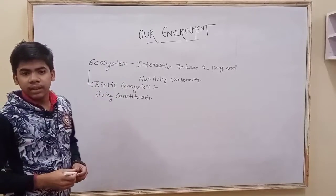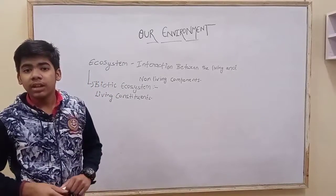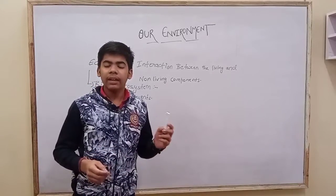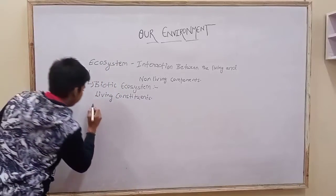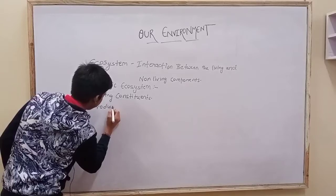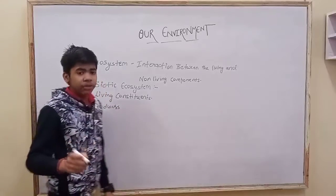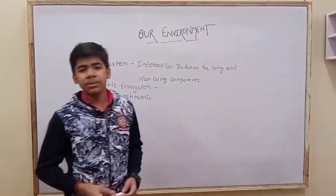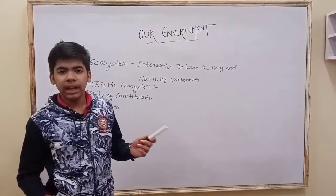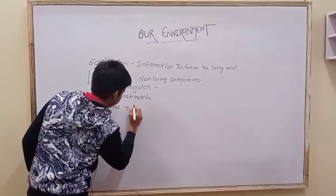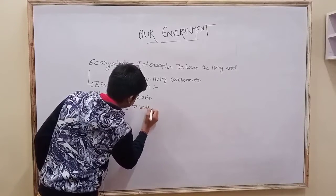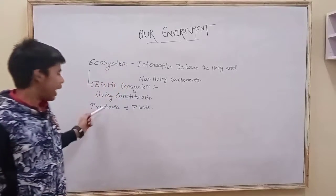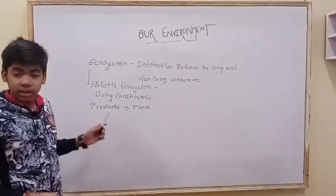The biotic components consist of three types: producers, consumers, and decomposers. Producers are the organisms which make their food from inorganic substances — for example, plants.